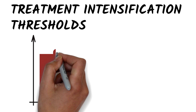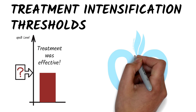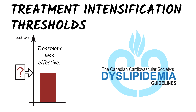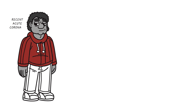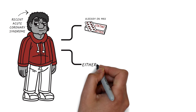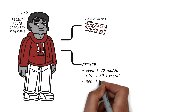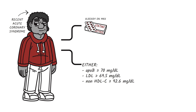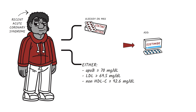Now let's talk about treatment intensification thresholds. How low should your patient's ApoB level be for you to consider that your treatment has been effective? The 2021 Canadian Cardiovascular Society lipid guidelines provide some insight. Based on the IMPROVE-IT trial, a patient who's had recent acute coronary syndrome, is already on maximally tolerated doses of statins, and has an ApoB ≥70 mg/dL, or an LDL-C ≥69.5 mg/dL, or a non-HDL-C ≥92.6 mg/dL, would benefit from intensified lipid-lowering therapy through the addition of ezetimibe in combination with a statin.